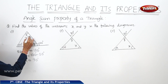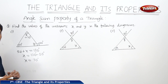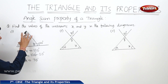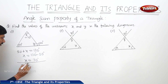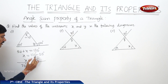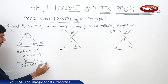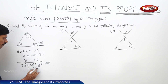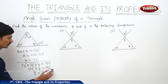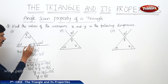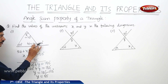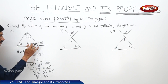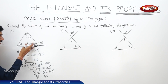So X equals 70 degrees. Now we can find the value of Y using the angle sum property of the triangle. The sum of the three angles is 180 degrees: X (70 degrees) plus 50 degrees plus Y equals 180 degrees. Then 70 plus 50 is 120 degrees plus Y equals 180 degrees, so Y equals 180 minus 120, giving Y equals 60 degrees. Y value can also be found using the linear pair: Y and 120 degrees form a linear pair, so Y plus 120 equals 180, again giving Y equals 60 degrees.